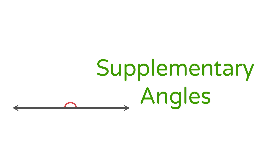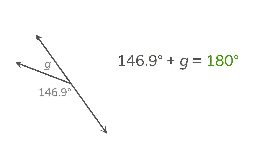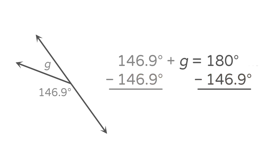Supplementary angles have measures that add to 180 degrees, so when a straight line is split into two adjacent angles, supplementary angles are formed. This pair of adjacent angles are supplementary because they form a straight line. One angle is 146.9 degrees, and the other we'll label with the variable g. Adding their measures and setting them equal to 180 degrees, then subtracting 146.9 degrees from each side, we get g equals 180 degrees minus 146.9 degrees equals 33.1 degrees.